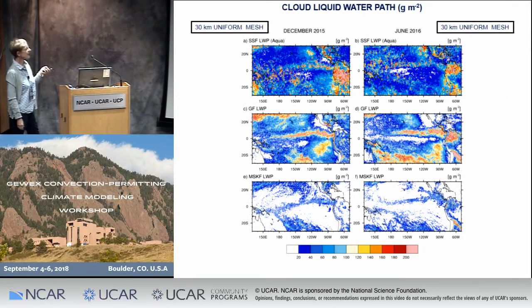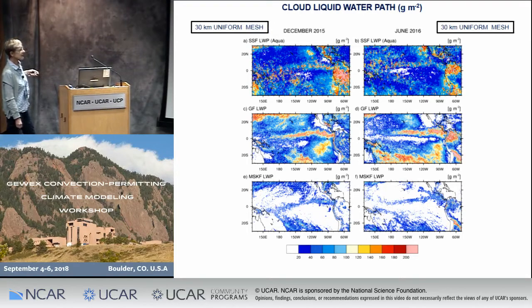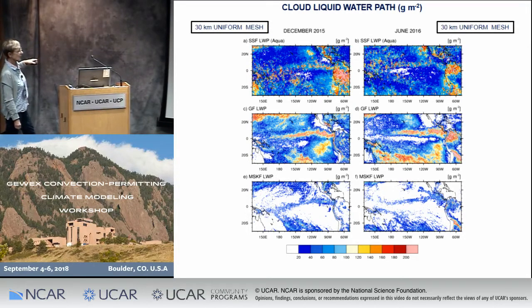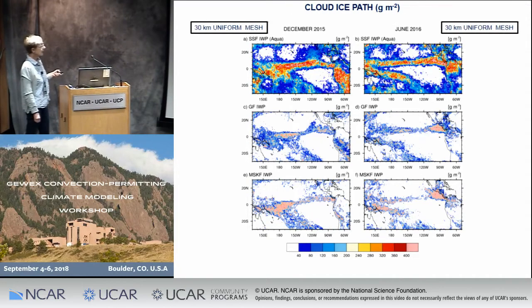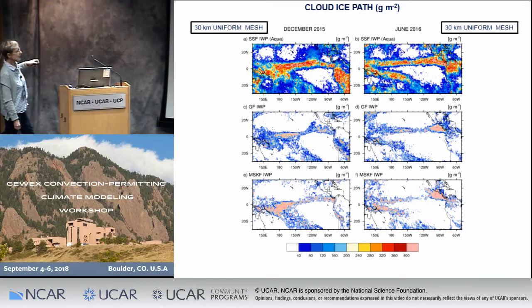Using a 30-kilometer uniform mesh, I ran December 2015 and June 2016 monthly simulations. Looking at the liquid water path for CERES data, the GF scheme, and the MSKF scheme — both simulations show very different cloud liquid water paths over the tropics. GF overestimates the liquid water path in both months, while MSKF underestimates it relative to observations. In particular, MSKF doesn't produce enough low-level cloud and shallow convection in some areas where the cloud liquid water path is extremely low relative to observations. For the ice path, GF produces a smaller ice water path compared to satellite data, while MSKF shows a higher ice water path relative to observations.